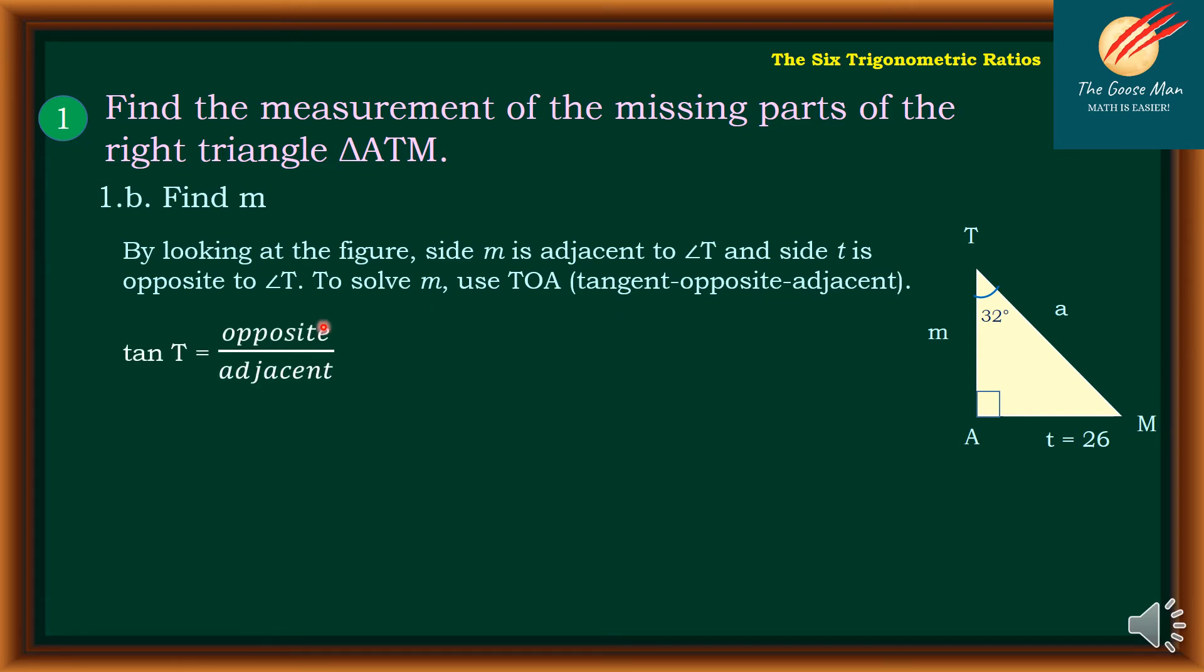Tangent T equals opposite over adjacent. However, the opposite is side T, and the adjacent is side M. Substitute further that angle T equals 32, T equals 26, and M is unknown.